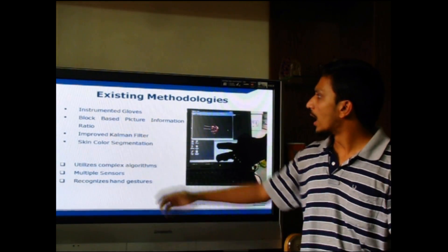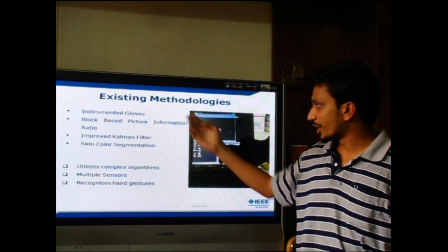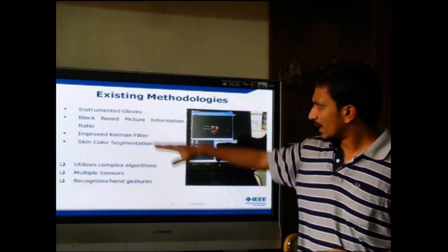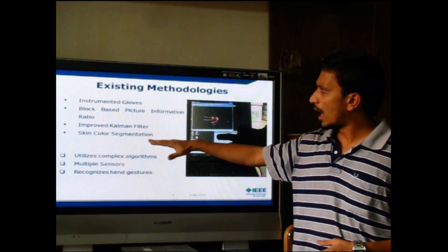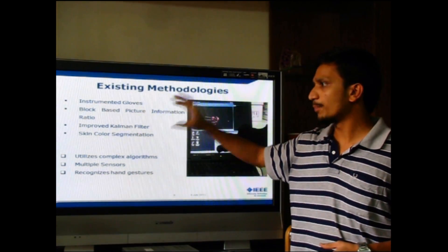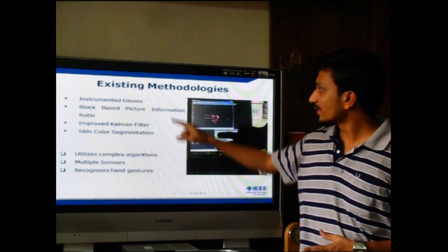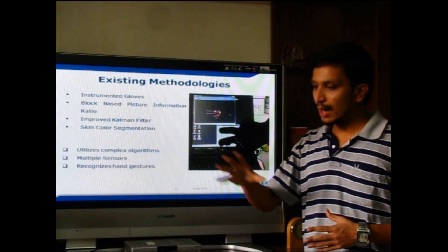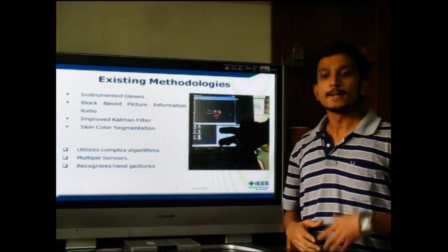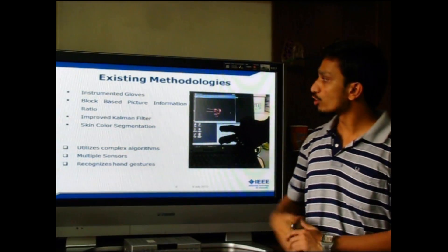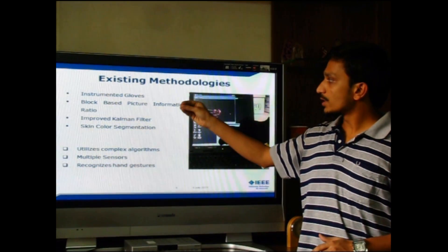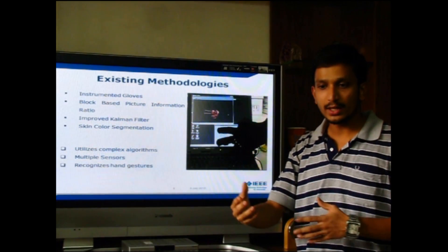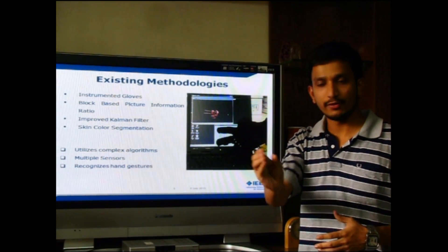And the algorithms which can be used for segmentation which is an integral part of sign language conversion into audio and textual form are block based picture information ratio, improved Kalman filter, skin color segmentation. These algorithms are efficient in performing segmentation but then they are complex. They take up good amount of processing time and they require good amount of processing power. They also require high hardware specification for them to be executed at a short interval of time.